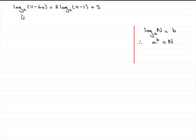Now in this question, we're asked to solve it for x. We've got log of 11 minus 6x in base 2 is equal to 2 log of x minus 1 in base 2 plus 3. Now, how do we solve something like this? Well, it's a log equation and it consists of one term here, another term here and one term here. Three terms in all.